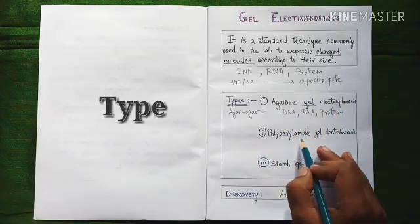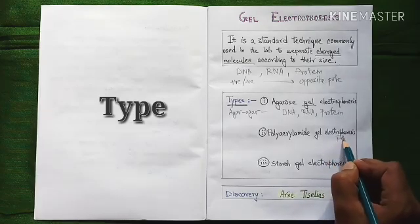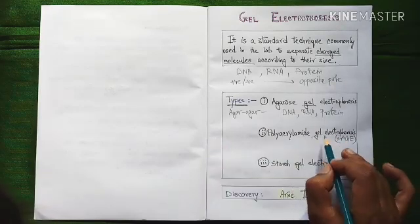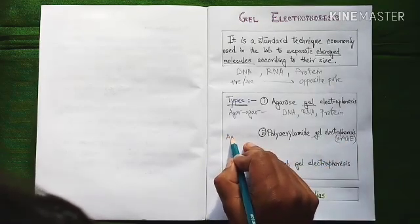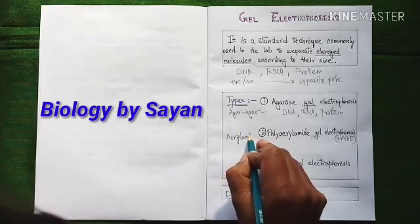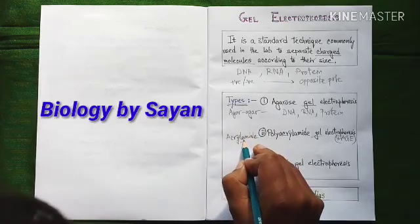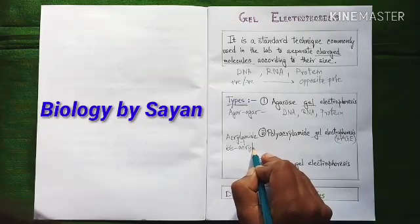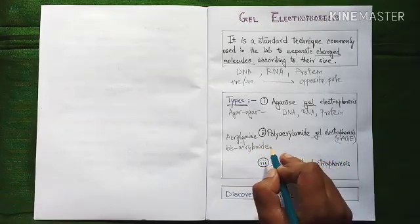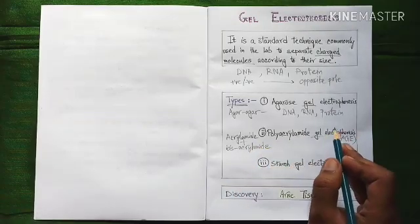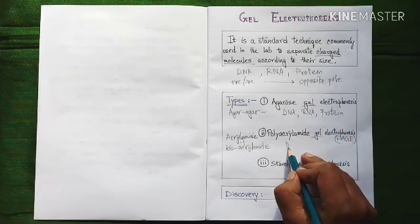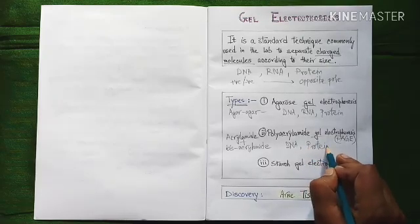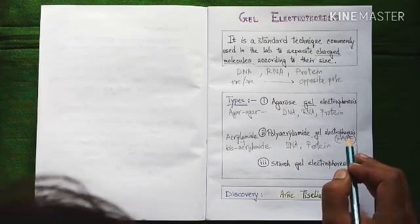Next type is polyacrylamide gel electrophoresis, also known as PAGE, and this type of gel is prepared by a mixture of chemical substances known as acrylamide and bisacrylamide. So it's a mixture of these two compounds.